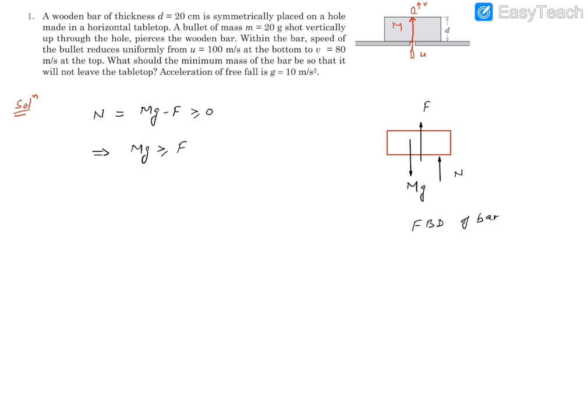This tells us the mass must be greater than or equal to F/g, so the minimum value should be equal to this. Now we need to find what force is acting on this bar because of the bullet.